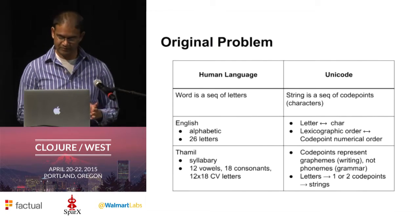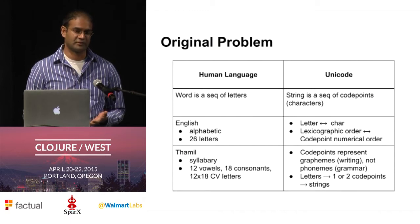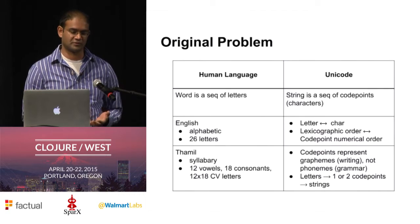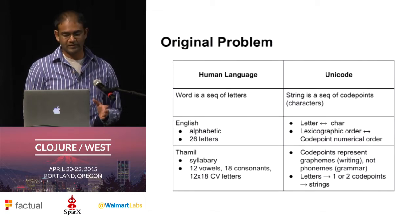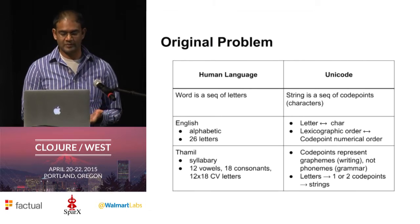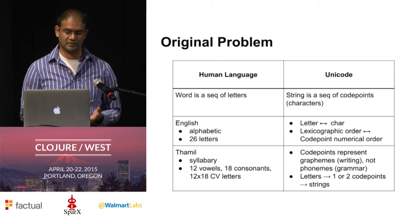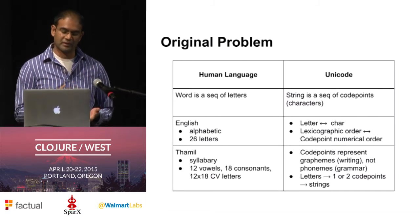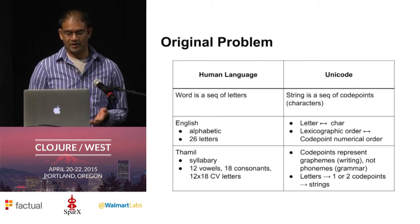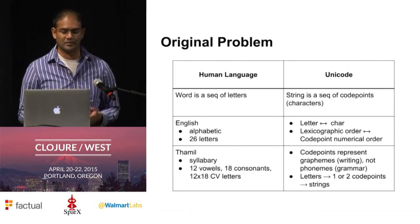The original problem I set out to solve is to do basic language processing for the Tamil language, which is spoken in southern India, northeastern Sri Lanka, as well as Singapore, Malaysia, and other countries throughout the Indian Ocean. For English, this is a lot simpler — there's a one-to-one mapping between a letter and a character. In Tamil, multiple code points are required to form a letter, and the Unicode specification for Tamil is based on how you write, not the phonemes or sounds, which is what the grammar is based on.